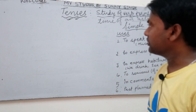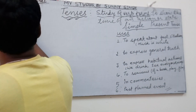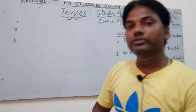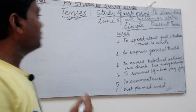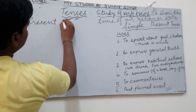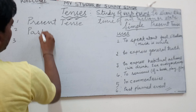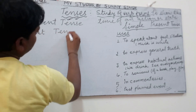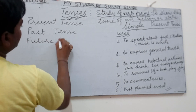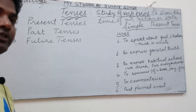As per prior knowledge, I think you are aware that tenses are studied in three forms: first, second, third. The first means present tense, the second is past tense, and the third one is of course future tense — present tense, past tense, and future tense.